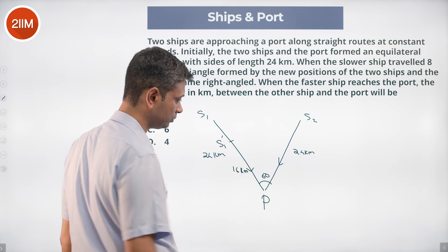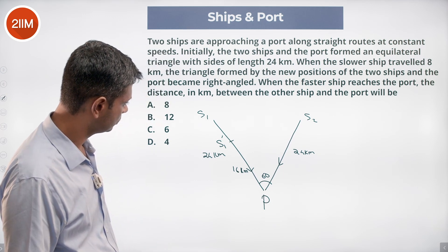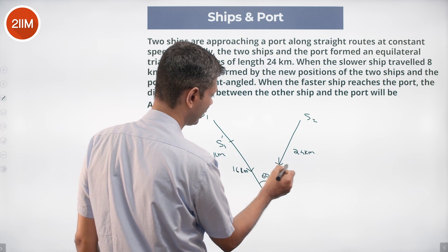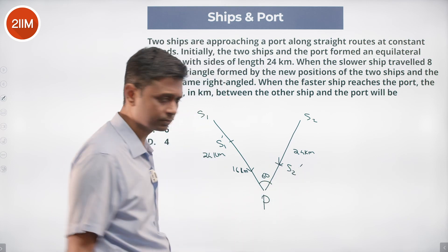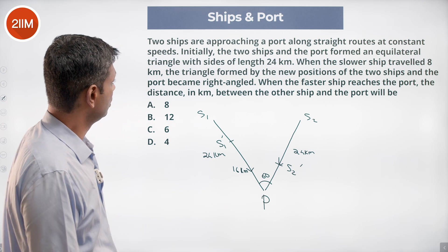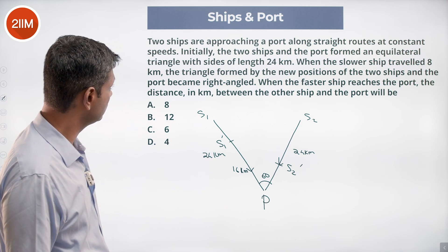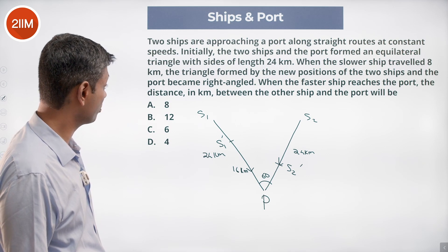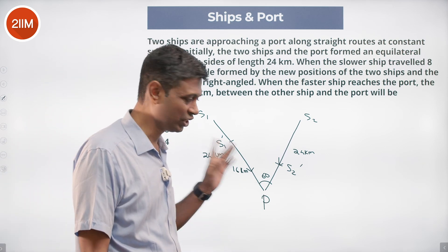The faster ship would have reached some point s2 dash. It traveled more distance. The triangle formed by the new positions of the two ships and the port became a right angle. This is 60 degrees, it's not a right angle.